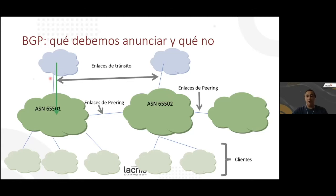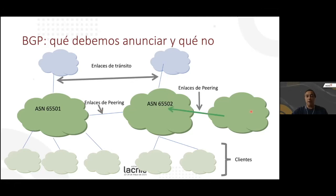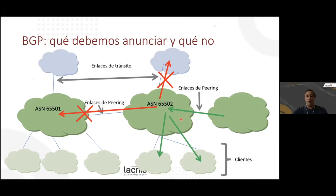Another consideration: what we receive through a transit link can be announced to our clients, but should not be forwarded to a peering link. Finally, if this AS receives routes through a peering link, these can be sent to clients — that is okay — but should not go to the transit link nor to another peering link. These rules are simple but are the basis for avoiding routing mistakes and should be taken into account when filtering announcements.